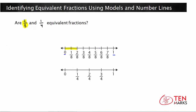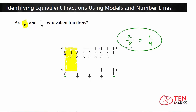Now let's take a look at the second number line. In the second number line, the space between zero and one has been divided into four equal places — one, two, three, four. To show one fourth on this number line, I'm going to highlight just one of these four parts. If you notice, the space taken up on the number line by two eighths and by one fourth is the same length — the same amount of space. That means two eighths is equal to one fourth. Even though these fractions have different numerators and denominators, they are equivalent. The top number line has eight divisions and you're using two, while the bottom has four divisions and you're using one — but it still represents the same amount of space between zero and one.